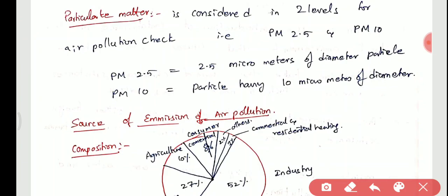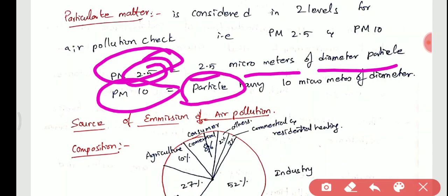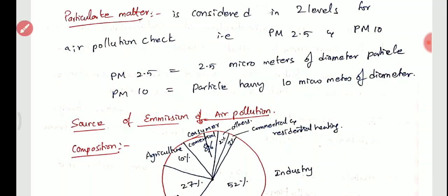You all know about Delhi air pollution. To check the Delhi air pollution index, we look at two kinds of micro-particles called particulate matter: PM2.5 and PM10. PM2.5 refers to particles with a diameter of 2.5 micrometers, and PM10 refers to particles with a diameter of 10 micrometers. These particles get into the lungs and cause respiratory problems.